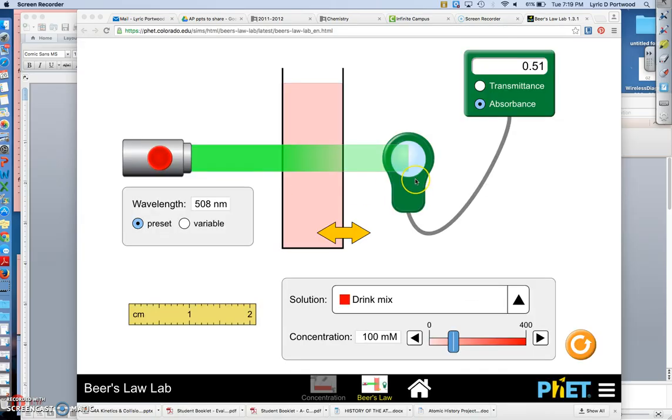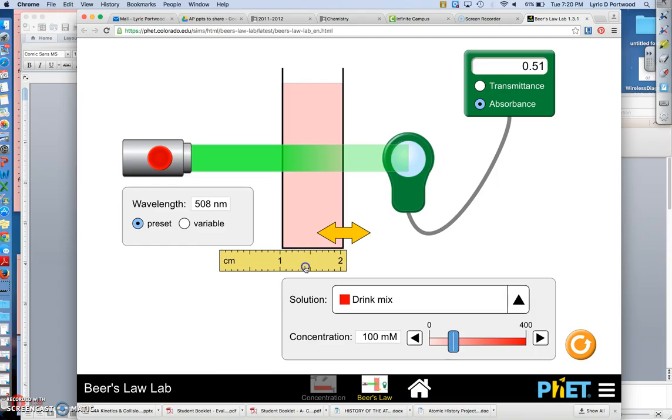Here is a visual representation of something you would do in a lab. Here you have a beam of light, and it's going to be a certain wavelength of light, and that's going to depend on what color solution you are dealing with. You have a ruler here, and the ruler you can use to measure the path length. The path length is the distance that the light is traveling through the absorbing molecules in the solution.